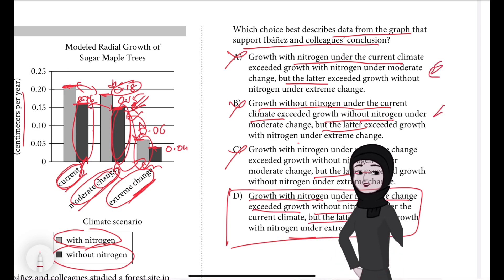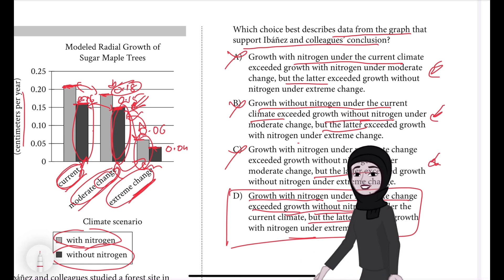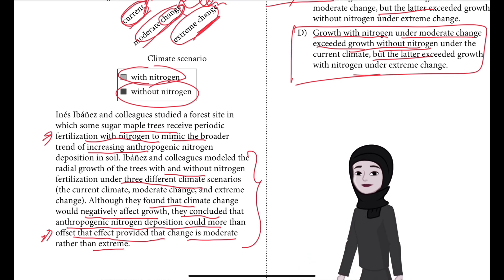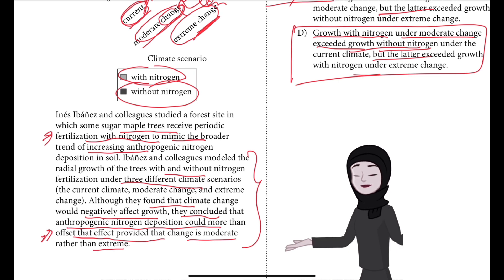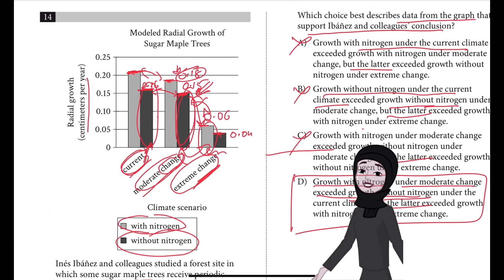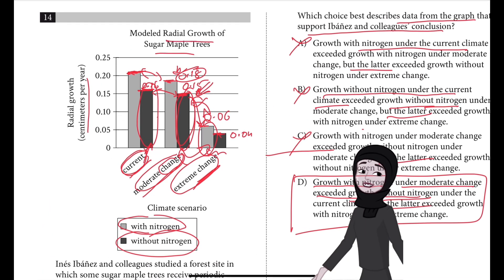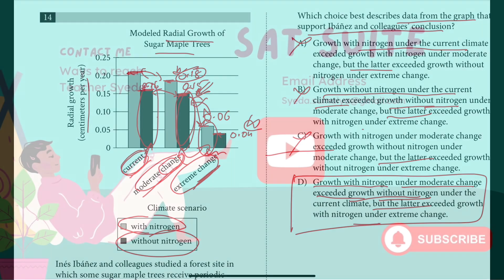You have to be very careful here because the wording of all choices is very similar to each other, so choose carefully. The main thing is to look at all three climate scenarios and identify exactly what is needed: they are trying to show that adding nitrogen under moderate climate change will not significantly affect radial growth of sugar maple trees, but under extreme change — with or without nitrogen — there is a decrease in radial growth.